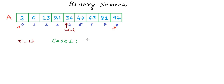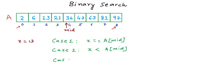Case one: x is equal to the middle element — we have already found x in the array, our search is over. If x is less than the middle element, then because the array is sorted, it lies before the middle element, and we can discard the middle element and all elements after it. Similarly, if x is greater than the middle element, it lies after it, so we can discard all elements before the middle element and the middle element itself. So in cases two and three, we discard half the elements from our search space and reduce it.